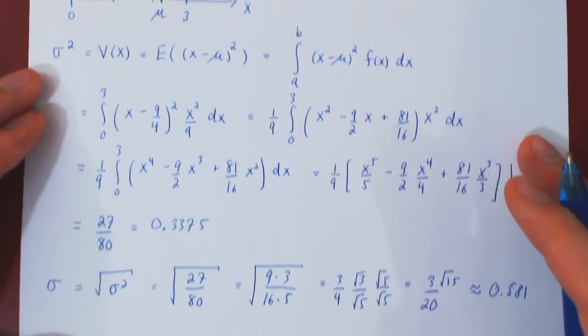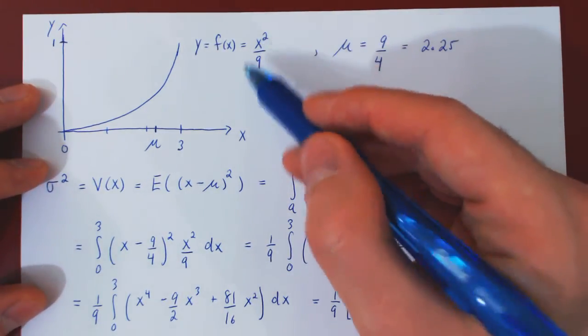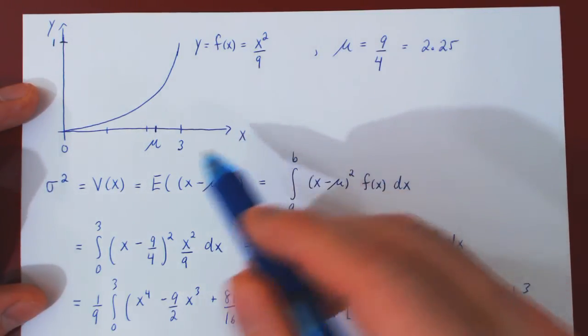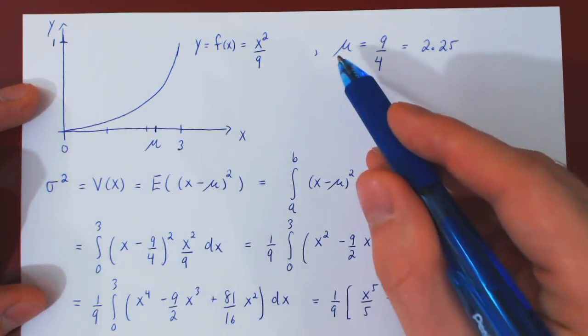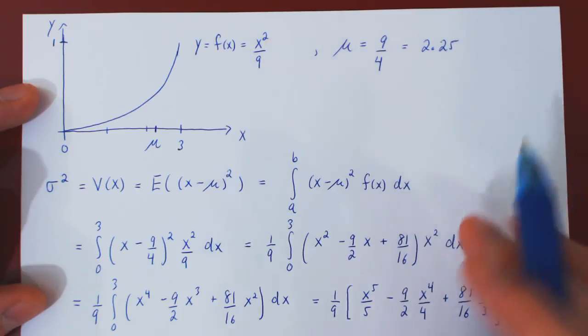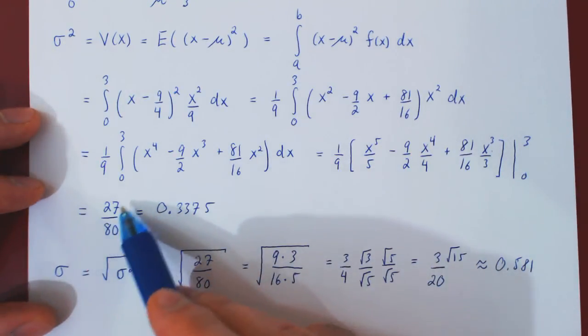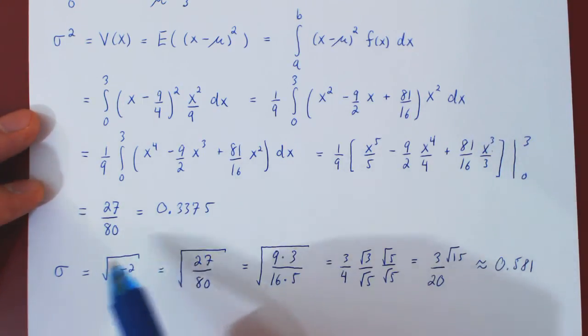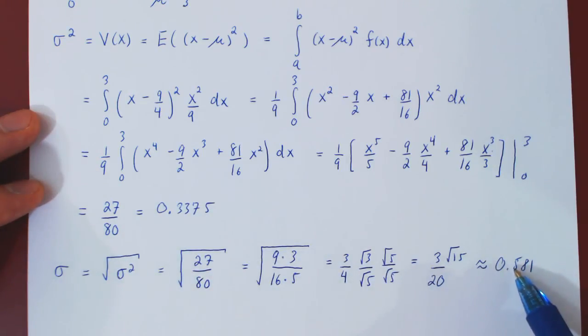And that's it. So, to conclude, the function x squared over 9 is a probability density function for the random variable x on the interval from 0 to 3. The mean, the average value of x is 9 quarters, or 2.25. The variance of x is 27 over 80, or 0.3375. And the standard deviation of x is the square root of the variance, which is approximately 0.581. And that's it.